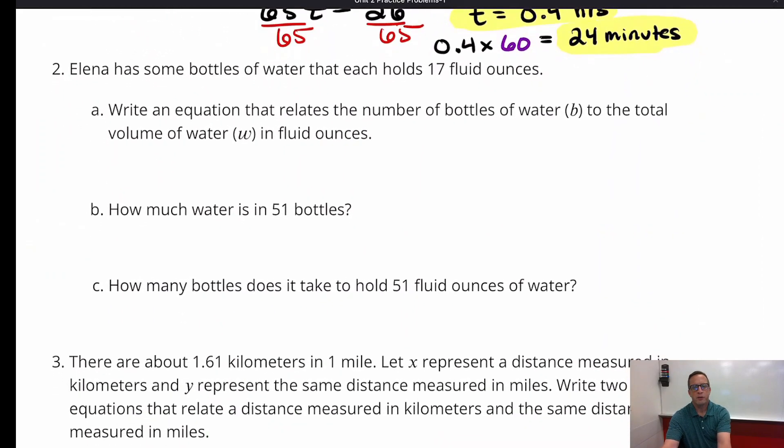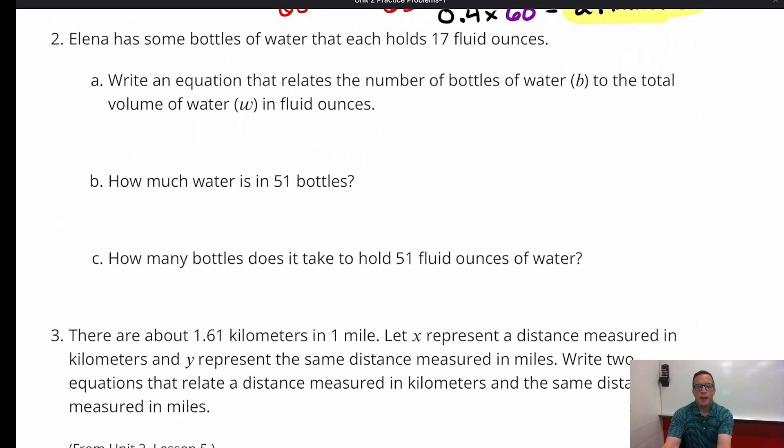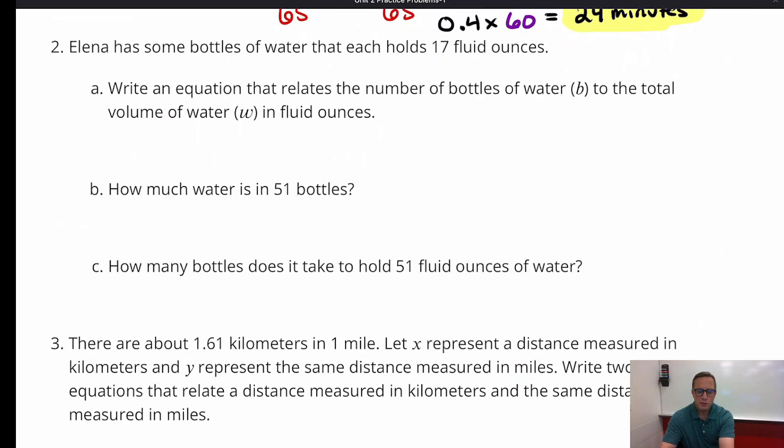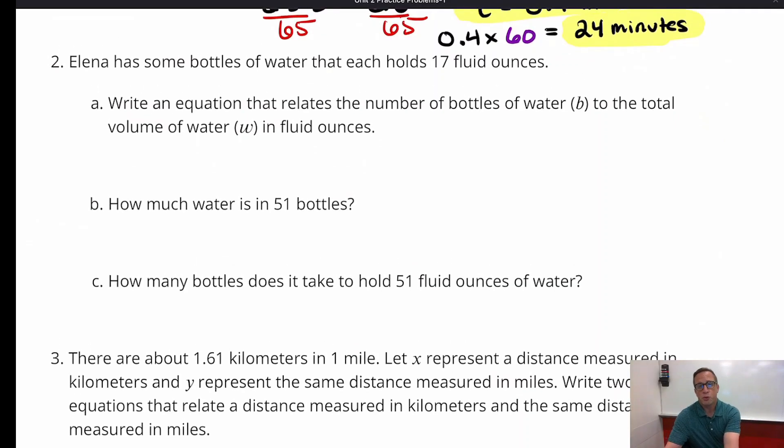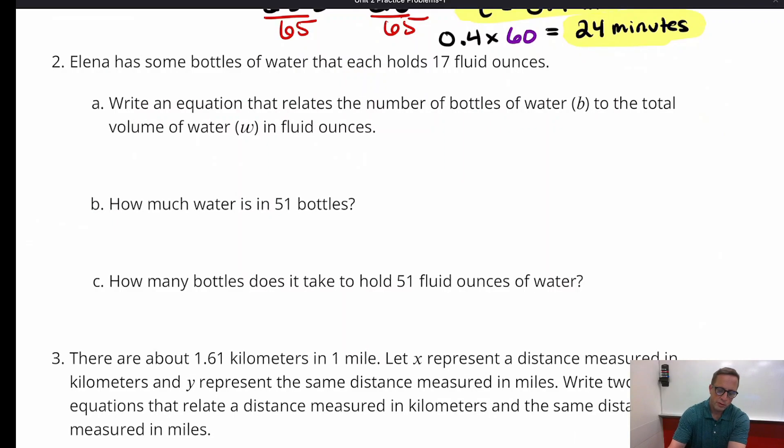Next problem, number two. It says, Alina has some bottles of water that hold 17 fluid ounces. A. Write an equation that relates the number of bottles of water B to the total volume of water W in fluid ounces. Alright, so this is very much like the last one. So this time we're not given an equation. We're told to figure it out. We've got to figure out this equation. So what are we going to do? So we've got 17 fluid ounces. And so for this one, we're going to set it up in such a way that W equals 17B.